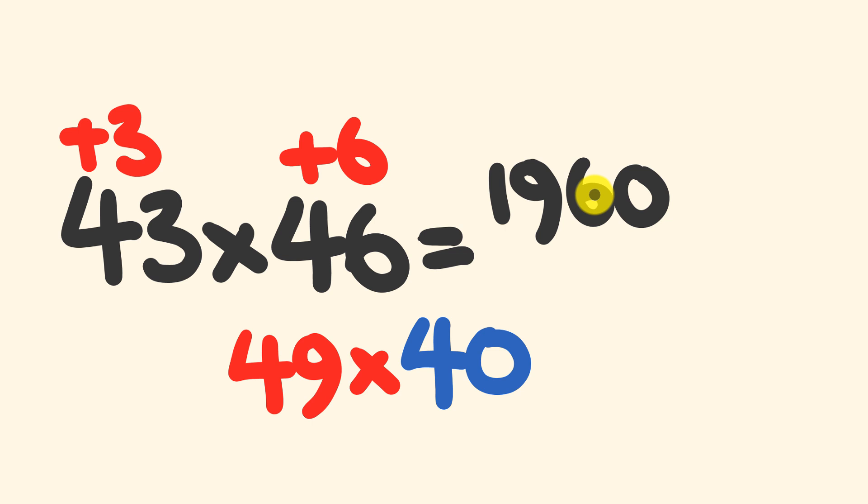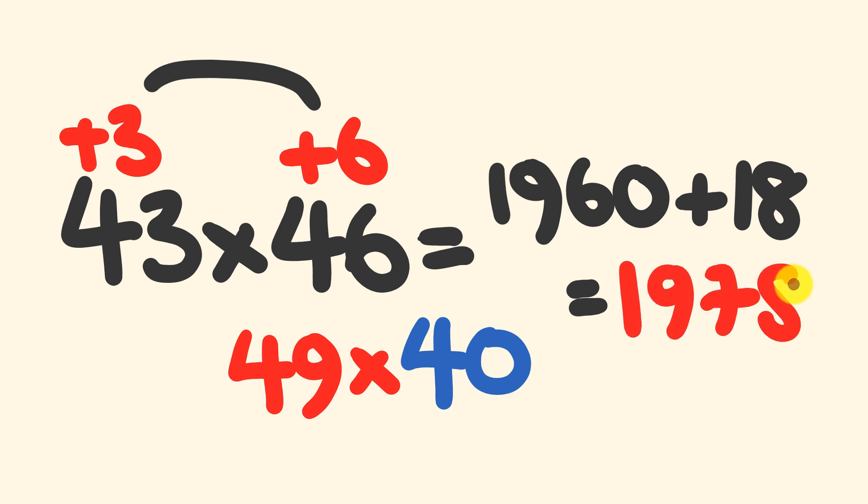Now what we do to get the final part of our answer, we just multiply these two numbers here. Positive 3 times positive 6, we get the answer of positive 18. So we add 18 on. And from that, we get our final answer, which is going to be 1978. The very same answer that we got at the start. So how's that? It's a nice, easy math trick for multiplication. Just another one to add to your mental math tool chest. And see the link in the description for the series where I'm looking at a whole bunch of mental math tricks.